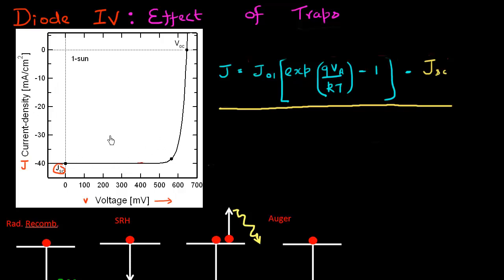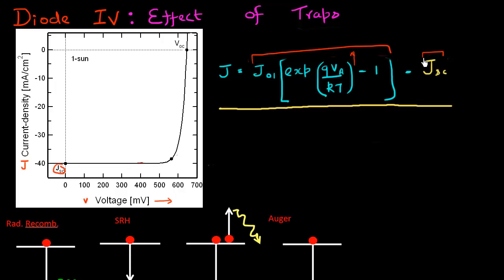This cell has been optimized for solar cell operation. When VA is large, this first term is large, so JSC remains constant. After a while, this first term starts to increase exponentially, resulting in an exponential increase. Then you reach a point where this first term cancels out the current due to generation, and we reach a point called the open circuit voltage, at which the total current is zero.